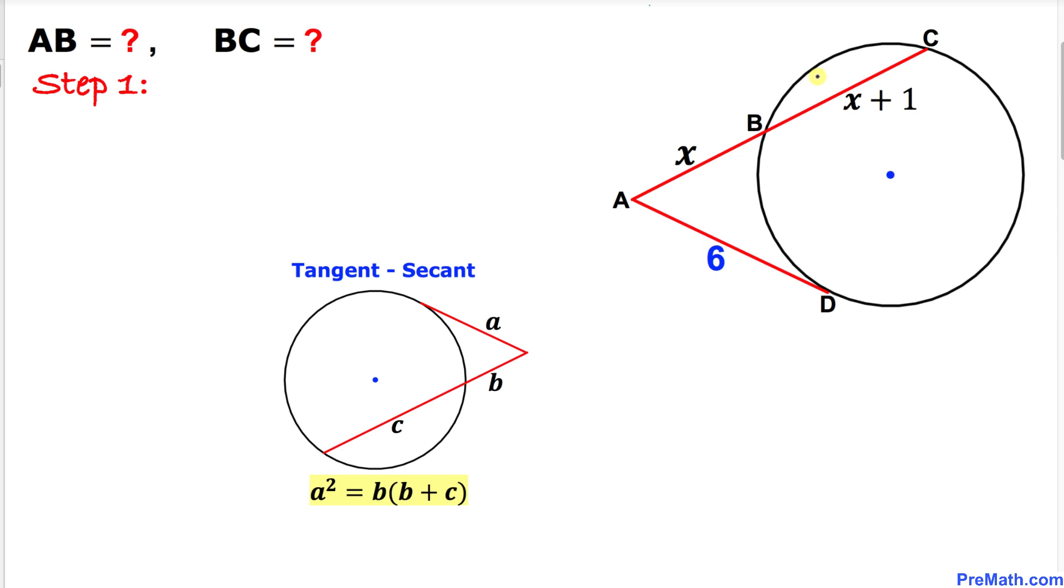Let's apply this rule to our given problem. The outside is x times the total part, x plus x plus 1, equals the tangent squared, which is 6 squared. Before we proceed further to calculate AB and BC, we must find the value of x first.